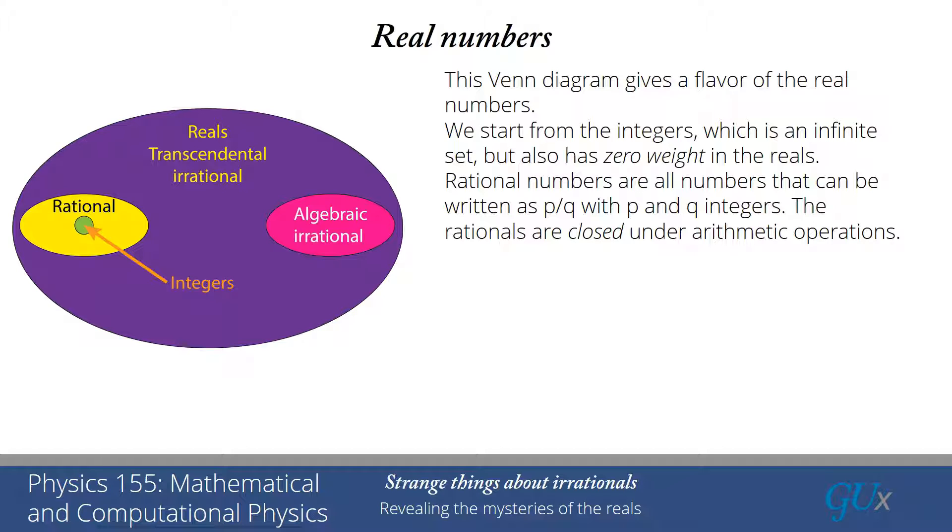The rationals are closed under arithmetic operations. That means if I take any two rationals and add them together or multiply, divide, or subtract them, the answer is a rational number. Any real that isn't rational, we call it irrational.